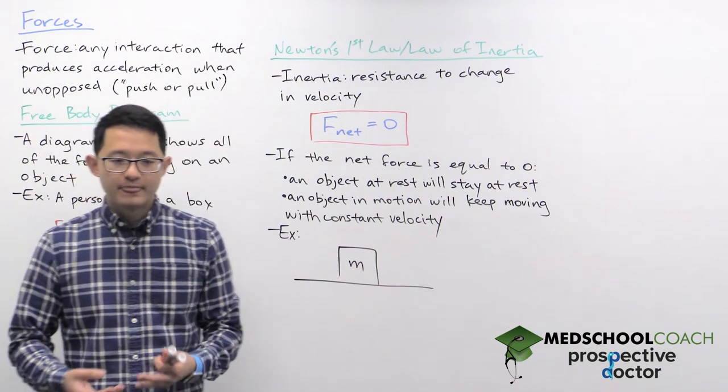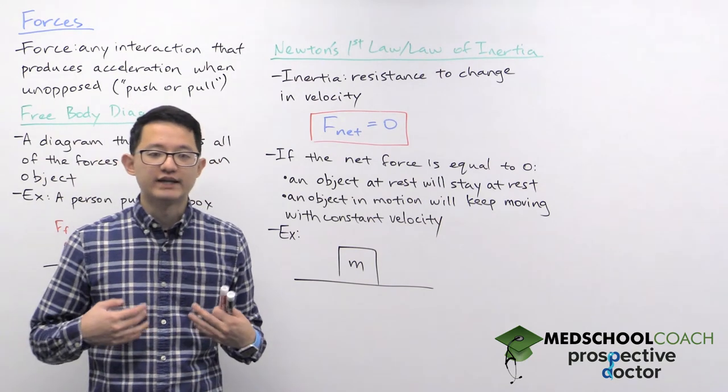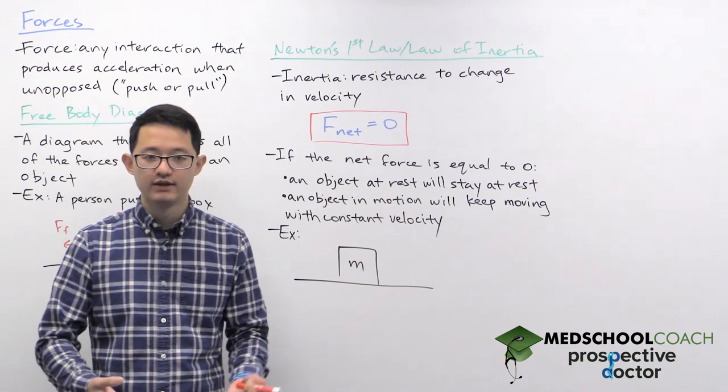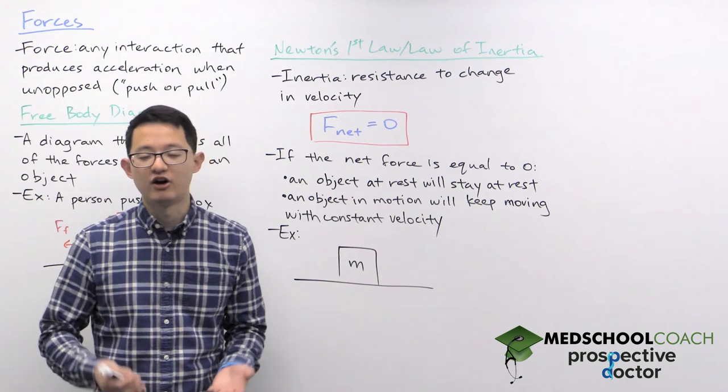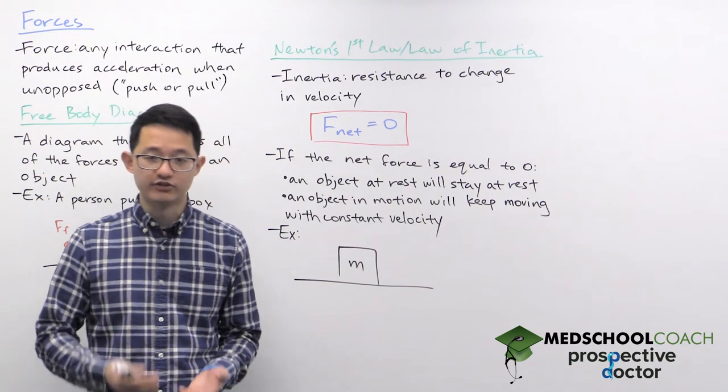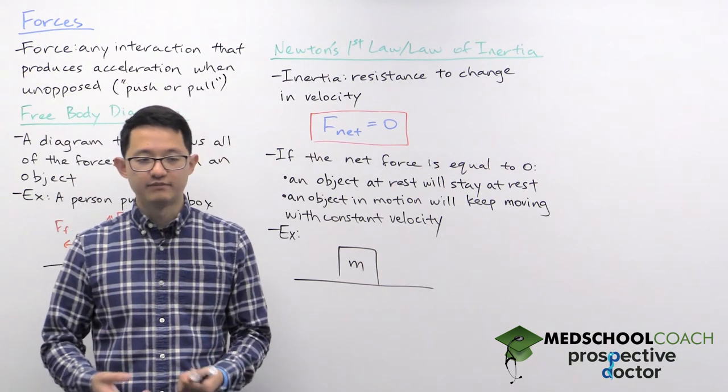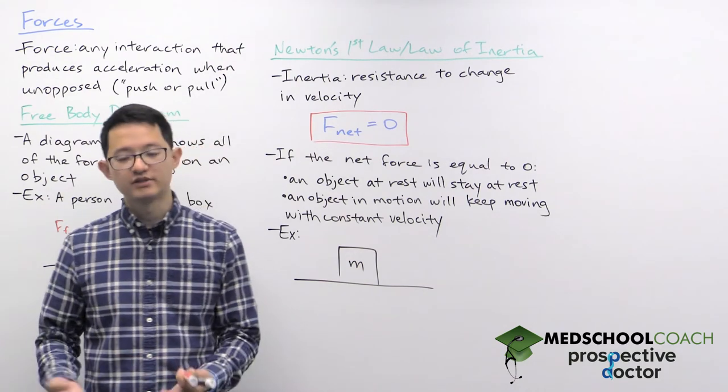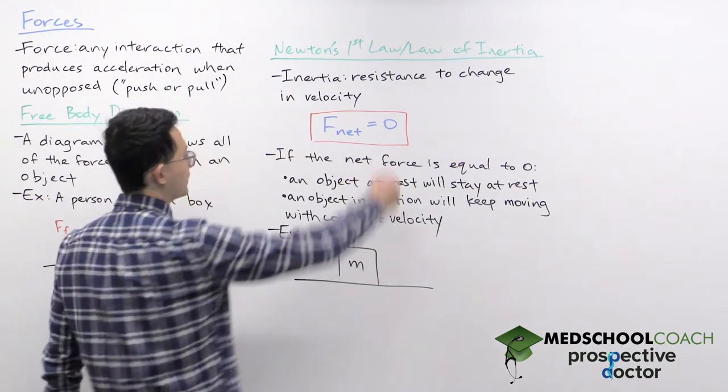Alright, so again, the idea is that if you're not doing anything to the box, then it's just going to continue whatever its motion it had to begin with. So one thing we can consider with inertia is how much inertia an object has. How much resistance does it have to change in velocity? And this is essentially considering the question, what makes one object hard to push, and what makes another object easy to push?